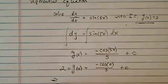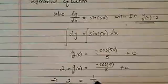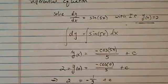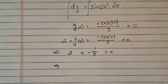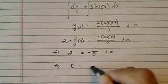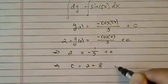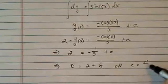So basically, we have an equation where 2 is equal to negative 1 fifth plus c. And from there, you can see that c is equal to 2 plus 1 fifth. Or c is equal to 11 fifth.